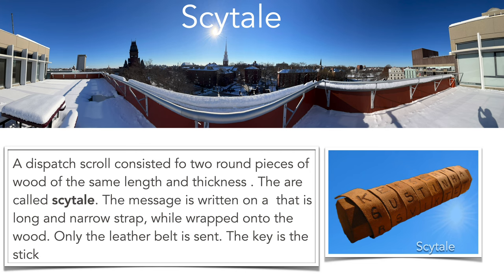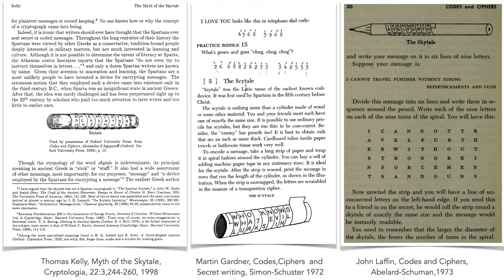The word scytale comes from Greek and means cylinder or stick. It is geometry that scrambles the text — wrap a leather strip, write on it, and then transmit the strip only. Thomas Kelly, a historian from Minnesota, argues in an article that the scytale was not used in Sparta, contrary to what many sources claim.